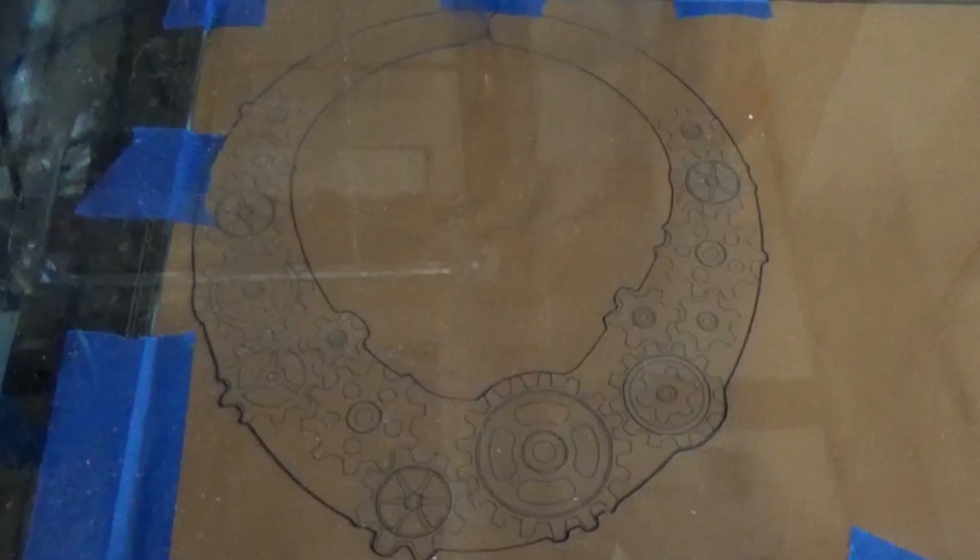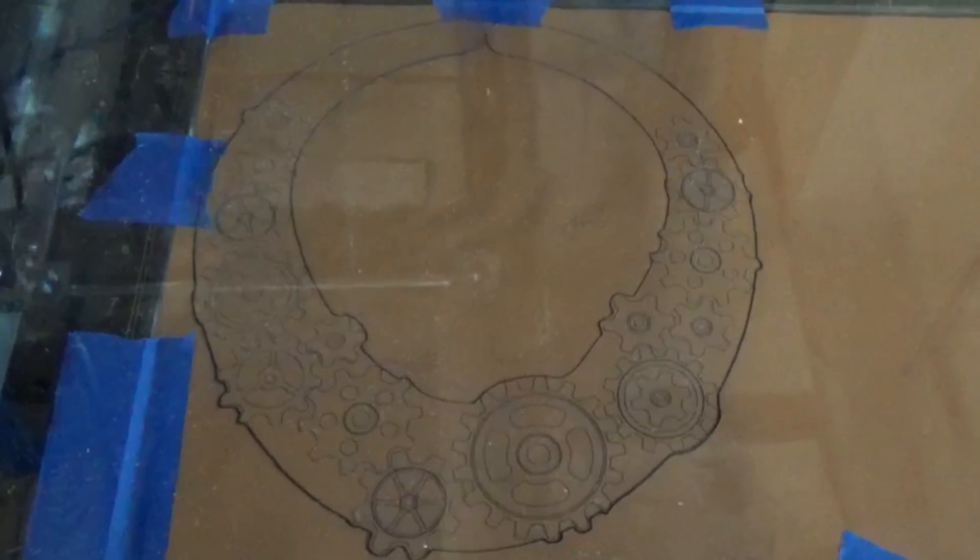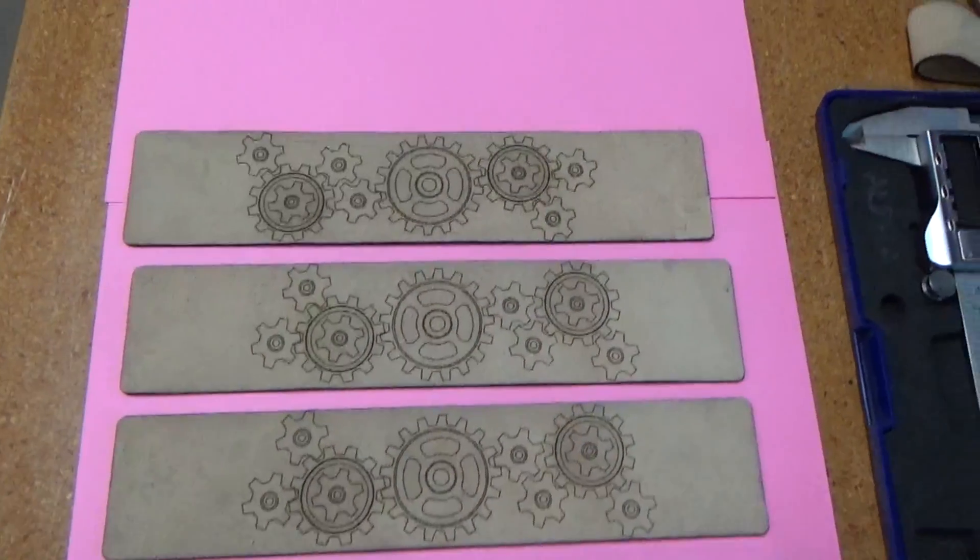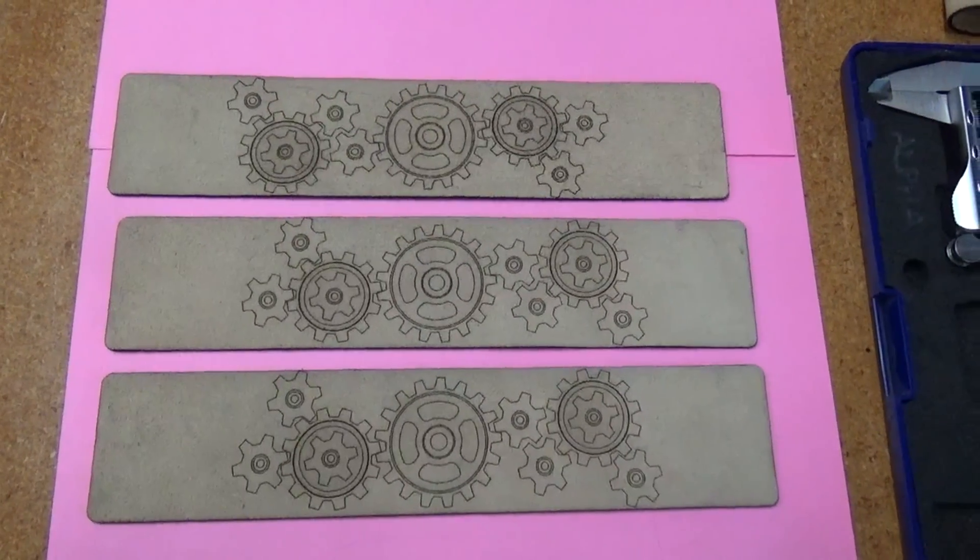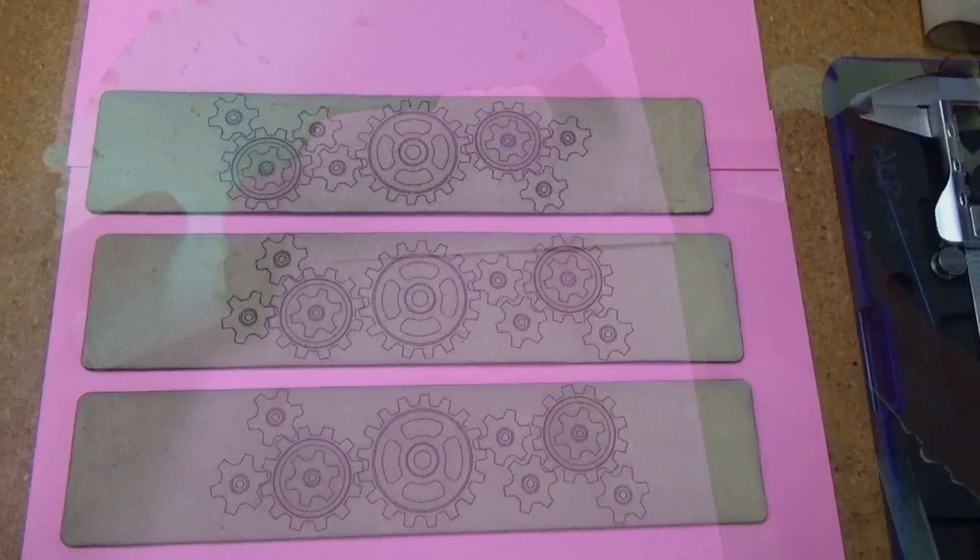So this is what the necklace looks like after it's engraved and cut. And while I was at it, I designed a little 2-inch wide bracelet to go with it. This is cut on a light color of suede, and the design shows up really well on this type of leather.